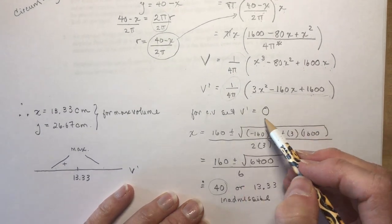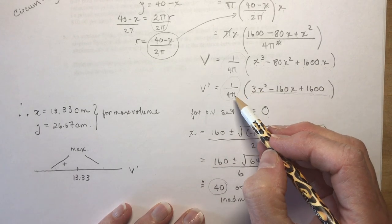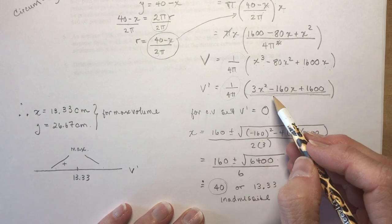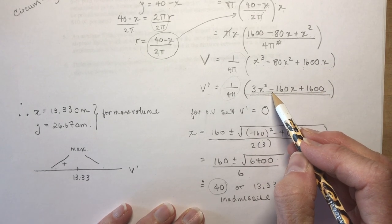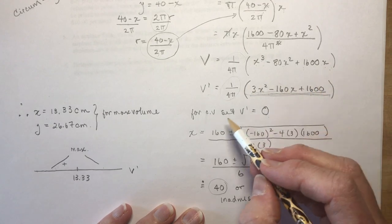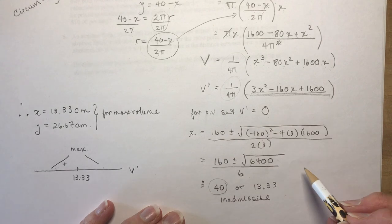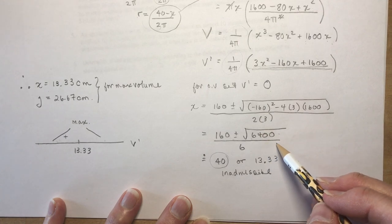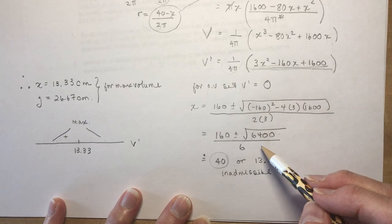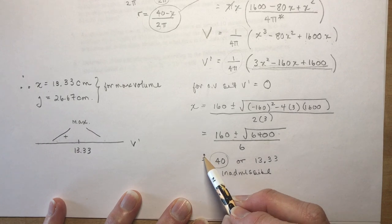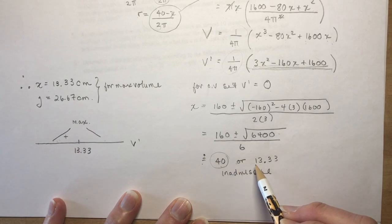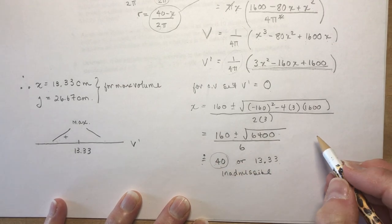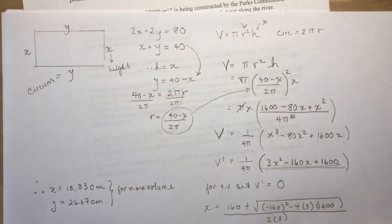So once you have your derivative, as you know, to find the critical values you have to set V' equal to zero. If this is zero then the whole thing is zero. So I want to know what makes this part of the equation zero. So I'm going to use the quadratic formula and solve for X. Once you've done all that work, and you can just freeze frame and do your math and make sure you're doing it properly, I get that X is approximately equal to 40 or 13.33.